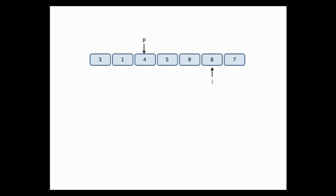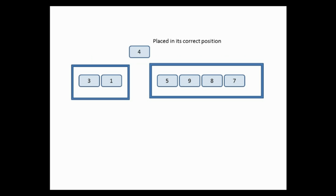We have successfully placed the pivot, and the array is now divided into two sub-lists. Note that we are not dividing the list physically — only logically.